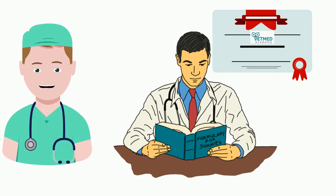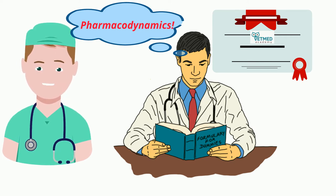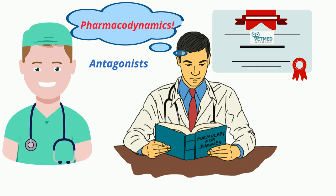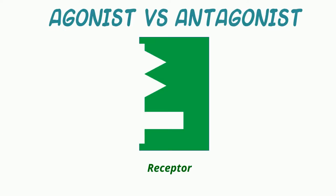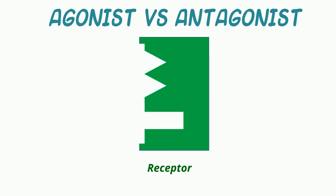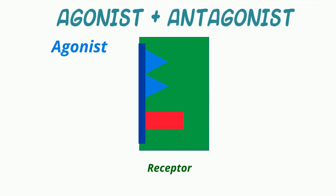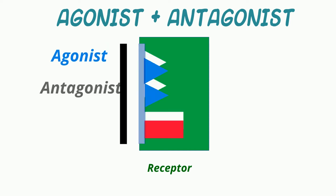Hi everyone. Continuing our discussion of pharmacodynamics and specifically drugs acting on receptors, let's now turn to drugs that tend to block the action of an endogenous or exogenous compound either through direct competition at the receptor, or via somehow altering the receptor, or in the case of inverse agonists, by moving the signal transduction mechanisms in the opposite direction of that caused by agonists. The simplest to understand is the antagonist. Most of these drugs are considered competitive antagonists, which means that they compete with an agonist for binding to a receptor by mass action. From a clinical perspective, pure antagonists have no intrinsic efficacy of their own. However, their effect is seen by blocking the effect of an endogenous or exogenous agonist, pure or partial.